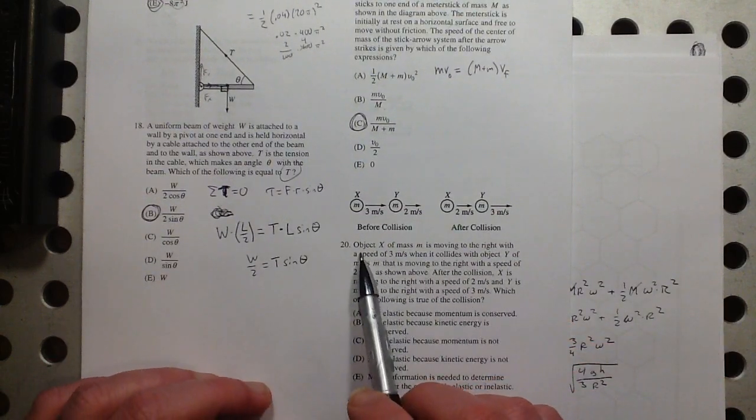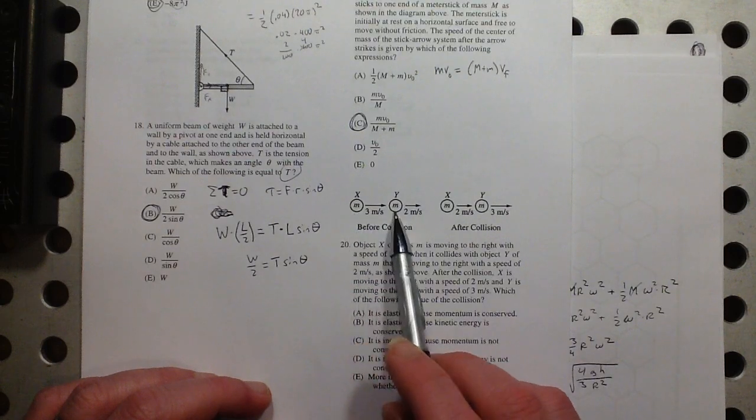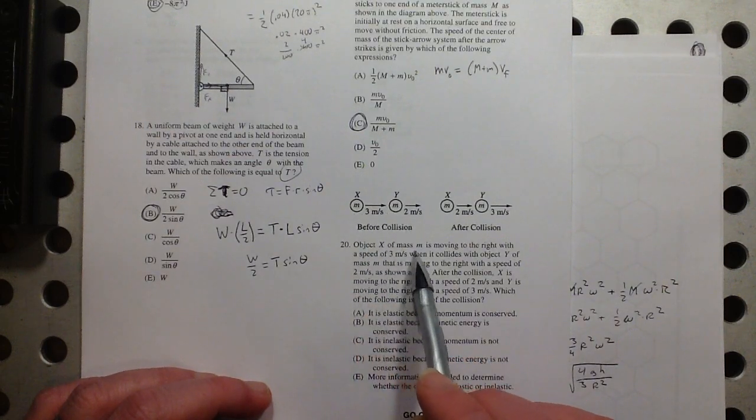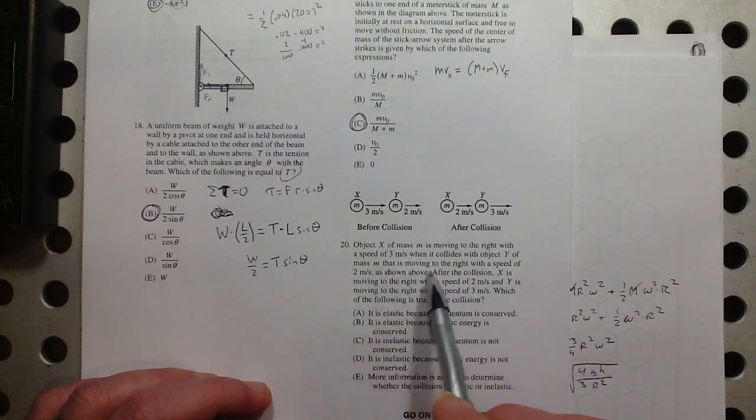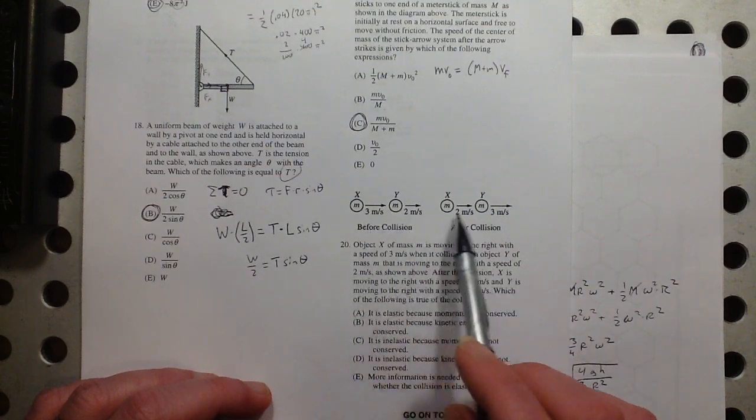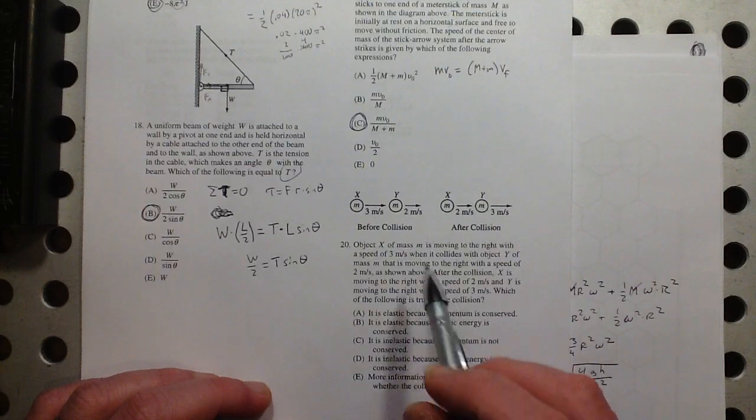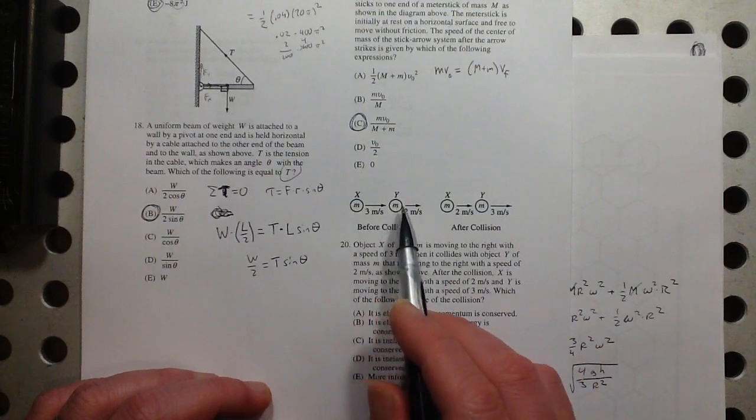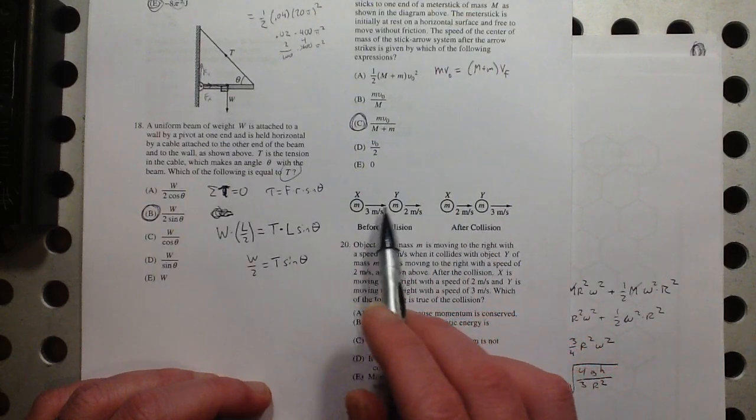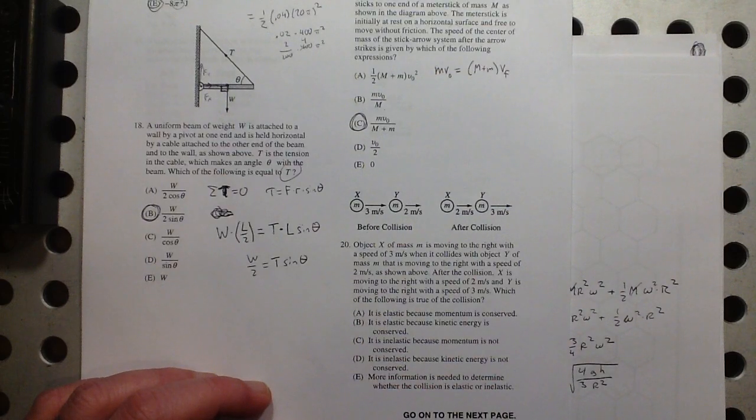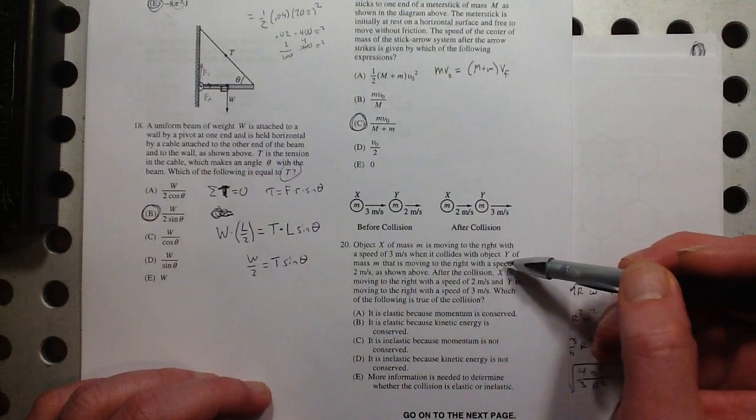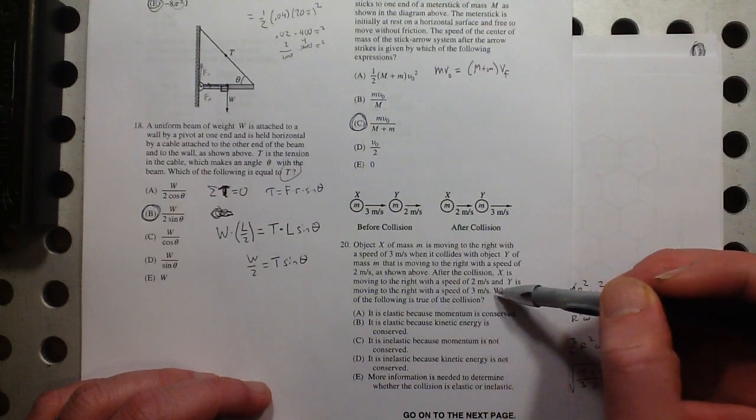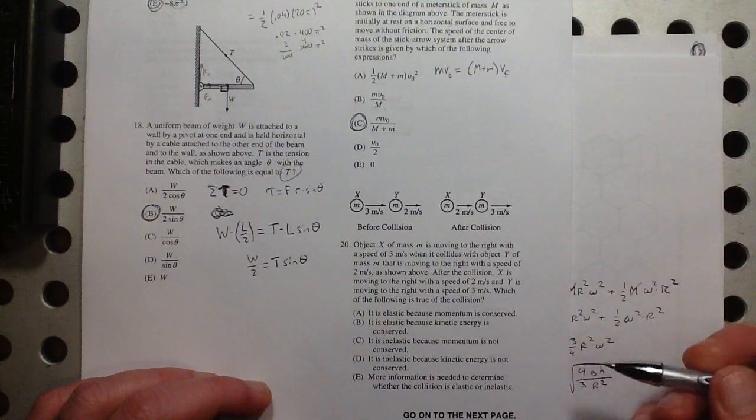So object here, mass M moving to the right with this speed, collides Y. Also mass M is moving to the right. So we actually saw this on the air track. And if you remember this, where an object collides into this one and they trade velocities. Remember that? And let's see. After the collision, which of the following is true of the collision?